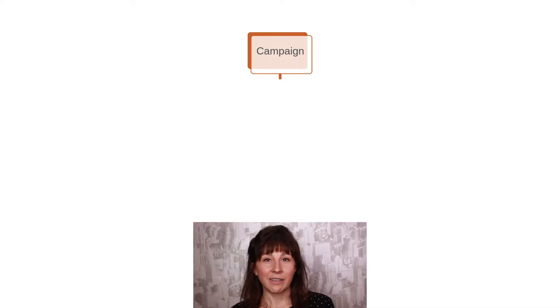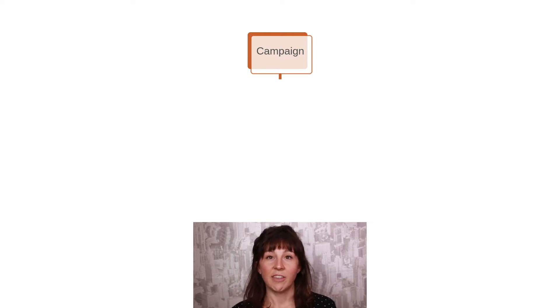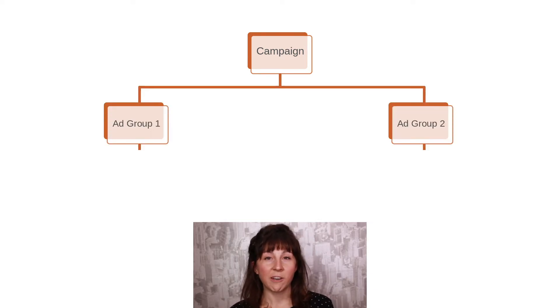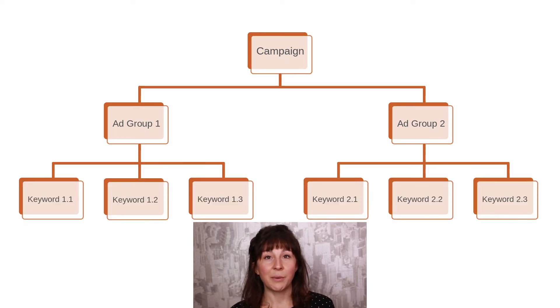Next, set up a clear campaign and ad group structure. You can think of campaigns as your main product or service lines, and then ad groups as specific products or services within those. Then, keywords fall within your ad groups. One easy way to set up your campaign structure would just be to follow your site structure.